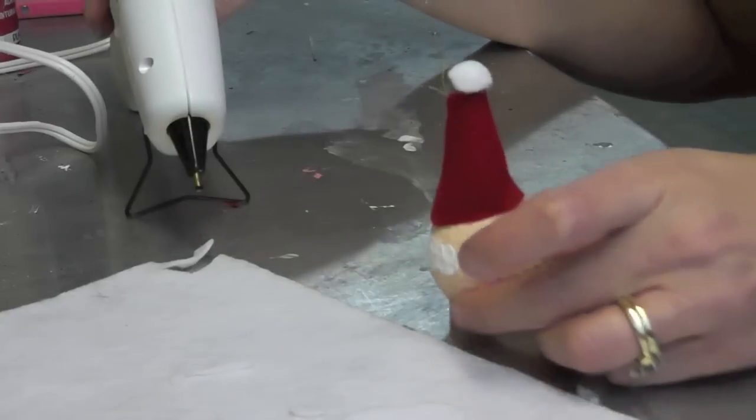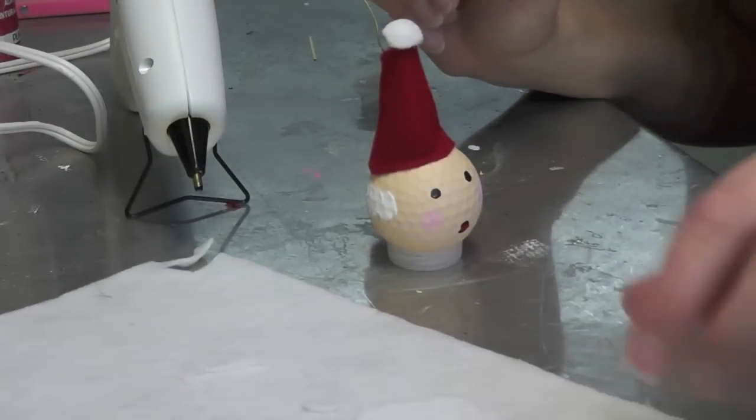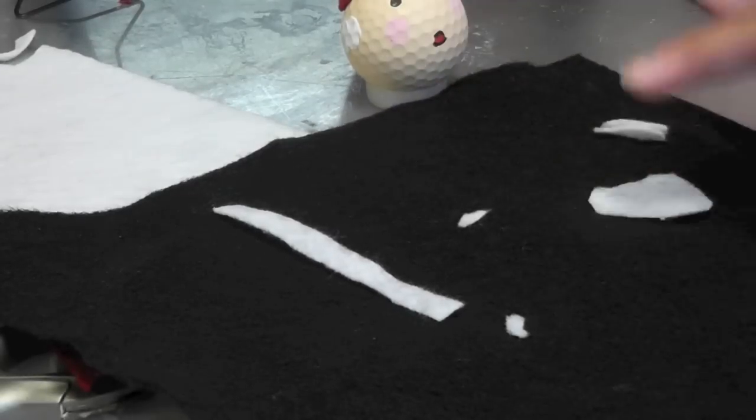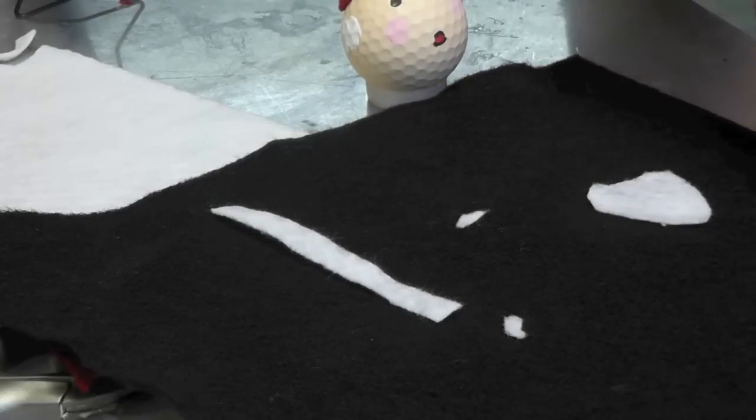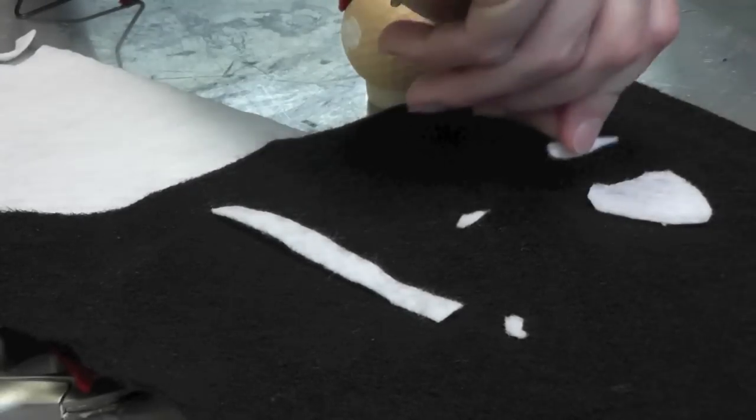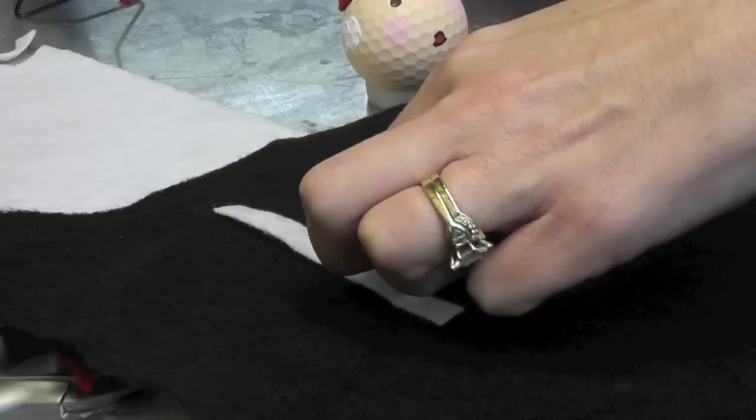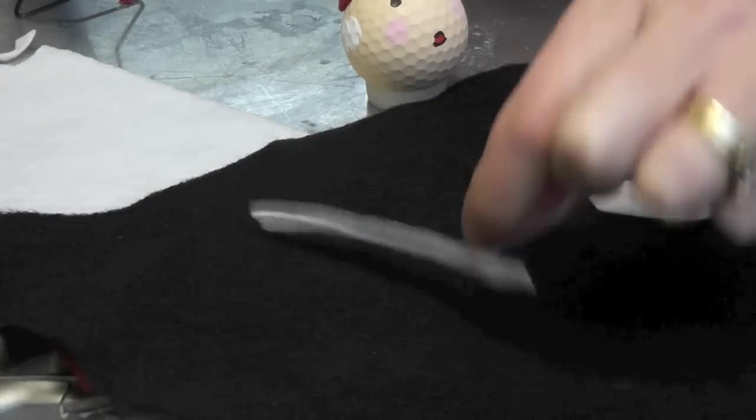Now I've gone ahead and I've pre-cut, let me put this on a different background, I have pre-cut some pieces for Santa's beard. I've got them right here, I've got the beard part and then the mustache and then a couple eyebrows and then the trim on the hat.